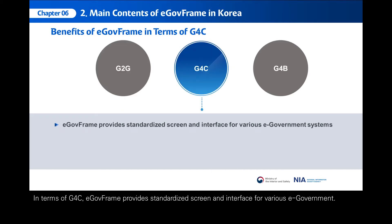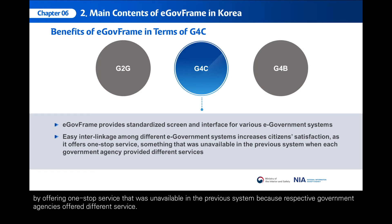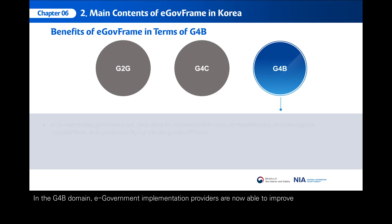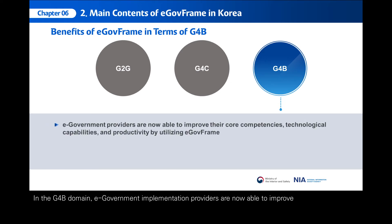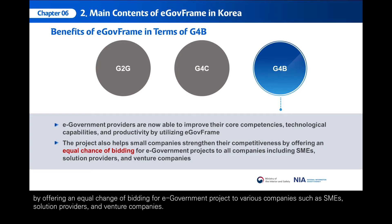In terms of G4C, E-GovFrame provides standardized screen and interface for various e-government services. Easy implementation of interlinkage among e-government systems increases levels of public satisfaction by offering one-stop service that was unavailable in the previous system because respective government agencies offered different service. In the G4B domain, e-government implementation providers are now able to improve their core competencies, technological capabilities, and productivity by utilizing E-GovFrame. The project also promotes strengthening SME's competitiveness by offering an equal chance of bidding for e-government projects to various companies such as SMEs, solution providers, and venture companies.